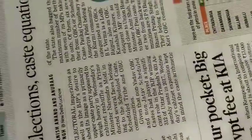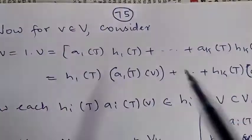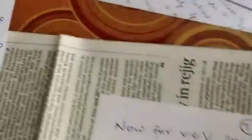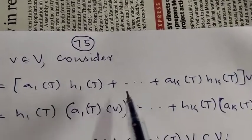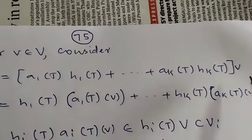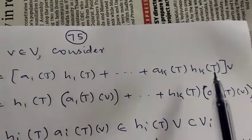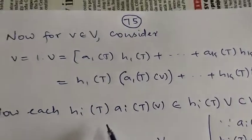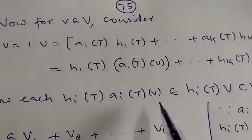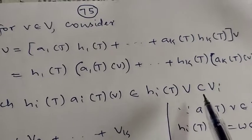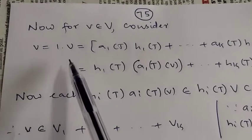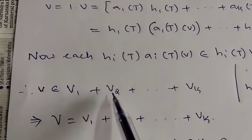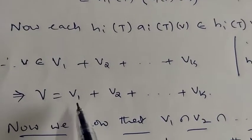For any V in V, V = 1·V = (A1(x)·H1(x) + ... + Ak(x)·Hk(x))(T)(V) = H1(T)·A1(T)(V) + ... + Hk(T)·Ak(T)(V). Each term Hi(T)·Ai(T)(V) belongs to Vi, so V is contained in V1 + V2 + ... + Vk. Therefore V is the sum of V1 through Vk.